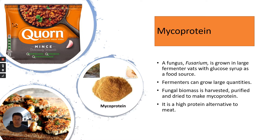One of these alternatives is called mycoprotein. Mycoprotein is a fungus called Fusarium, and it's grown in large fermenter vats with glucose syrup as a food source. Fermenters can grow large quantities, and the fungal biomass can be harvested, purified, and dried to make mycoprotein. It's a very high protein alternative to meat and is also low in fat. You might know mycoprotein by its trade name, Quorn, though other mycoproteins are available.